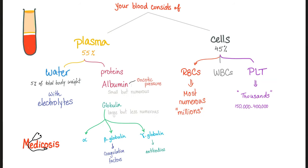Your blood consists of plasma and cells. The plasma is water and proteins. The proteins are albumin or globulin. Albumin is small but more numerous; globulin is larger but less numerous. Since albumin is more numerous, albumin is responsible for the oncotic pressure. Globulin has three types: alpha, beta globulin, and gamma globulin. Beta globulins include the coagulation factors, and the gamma globulins are the immunoglobulins or the antibodies.